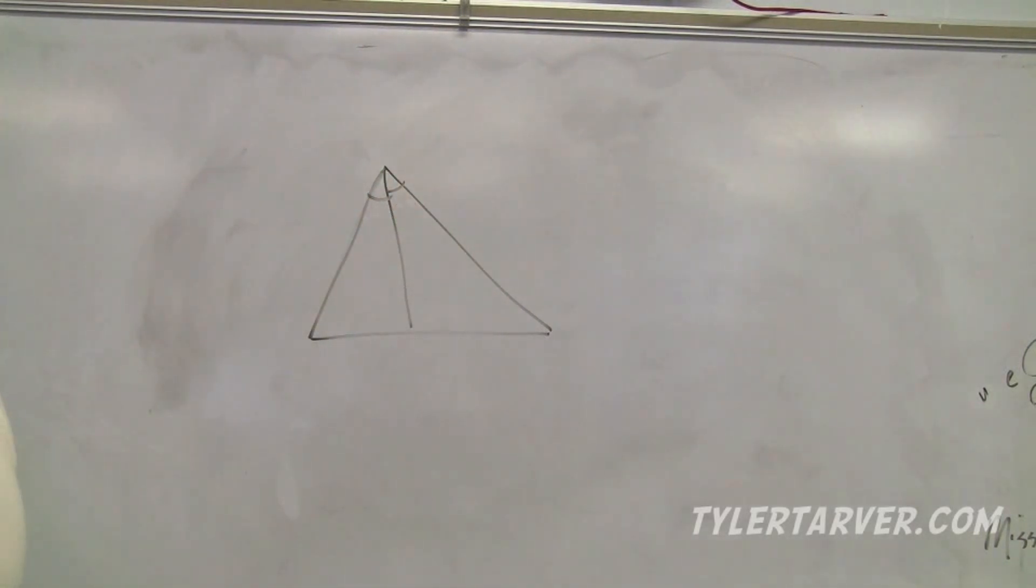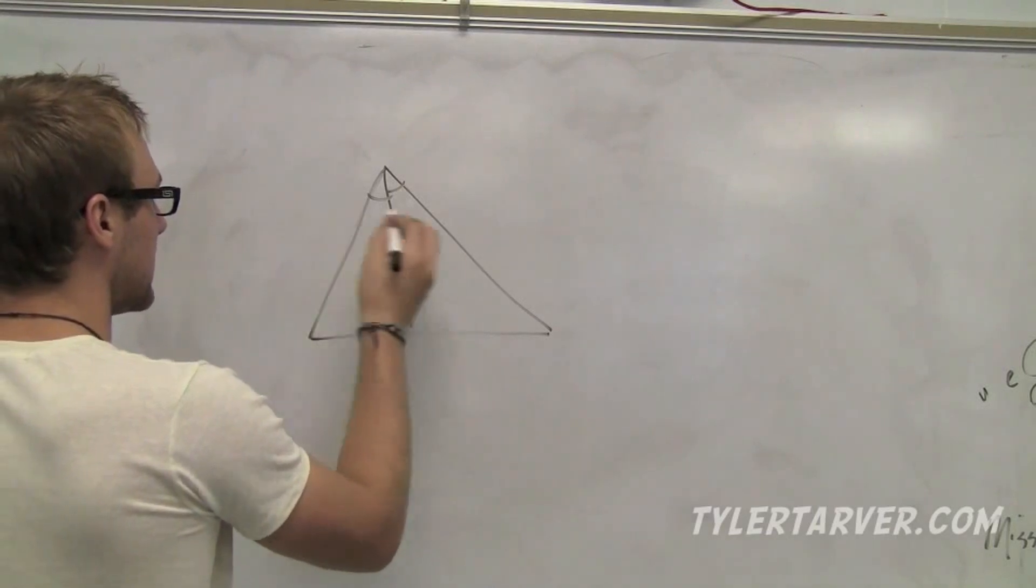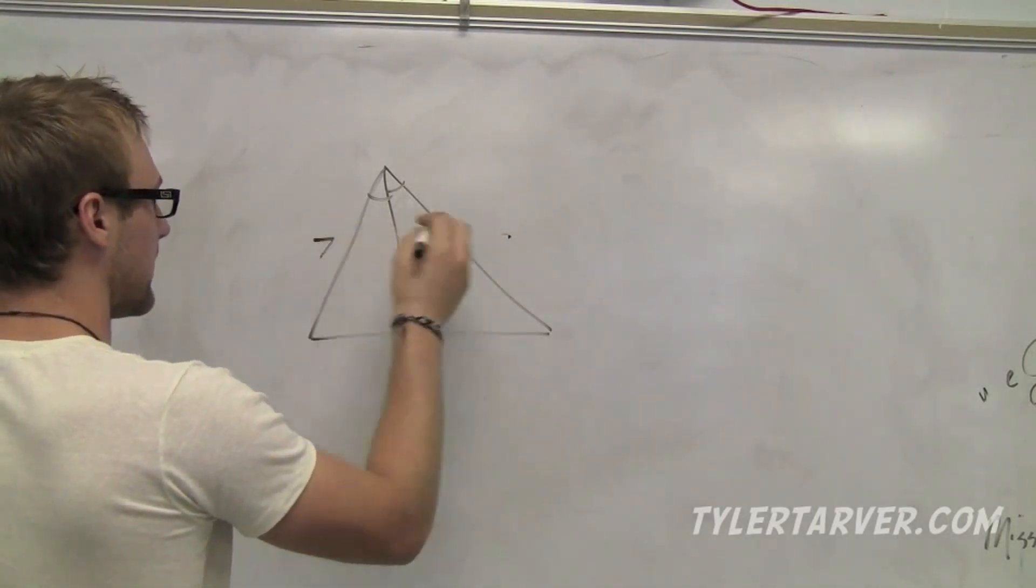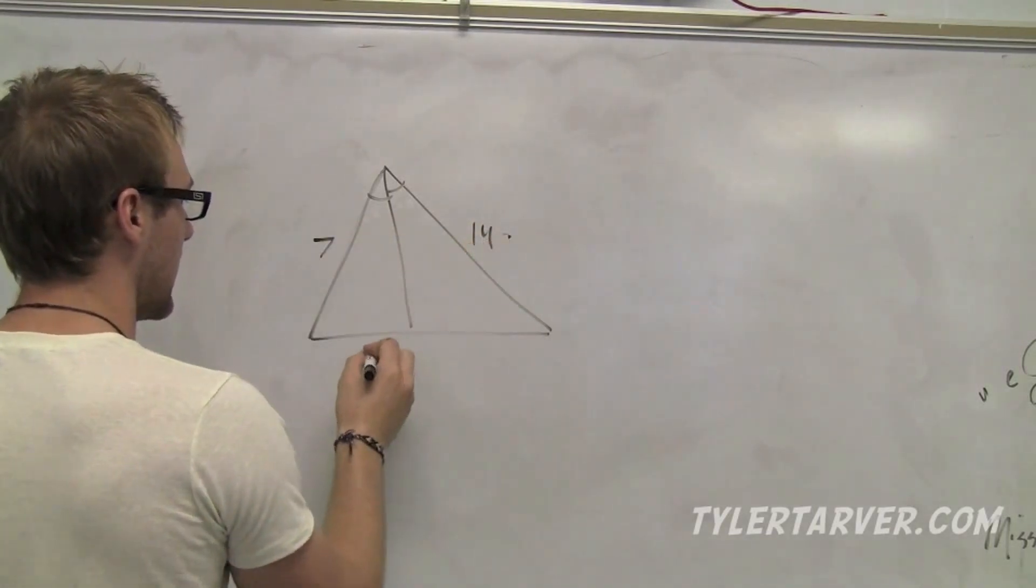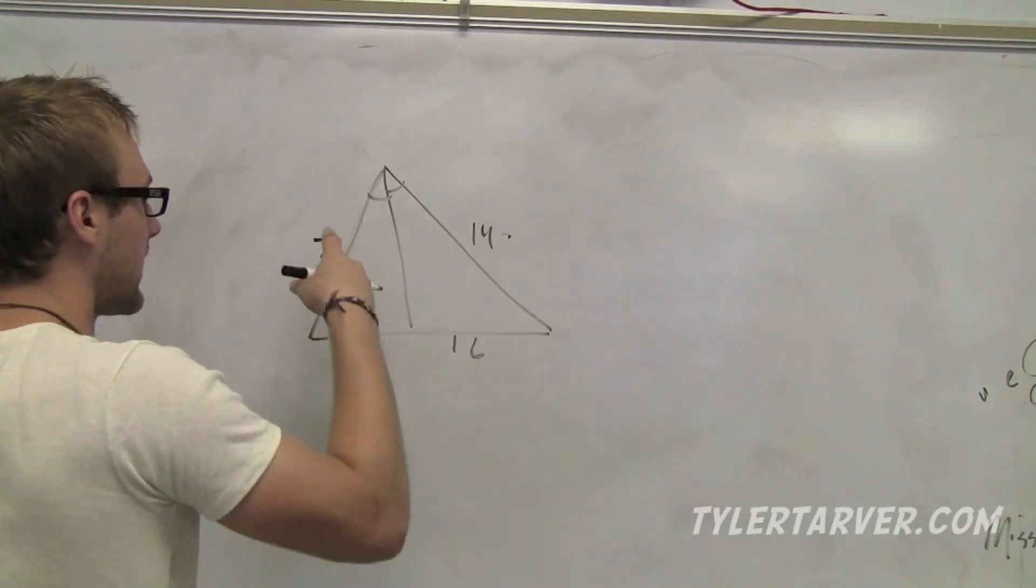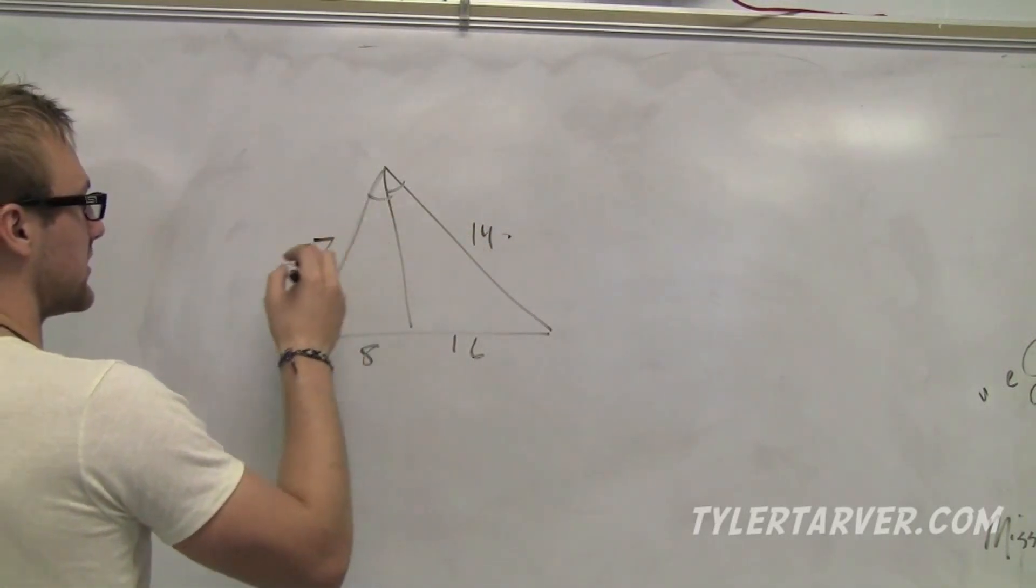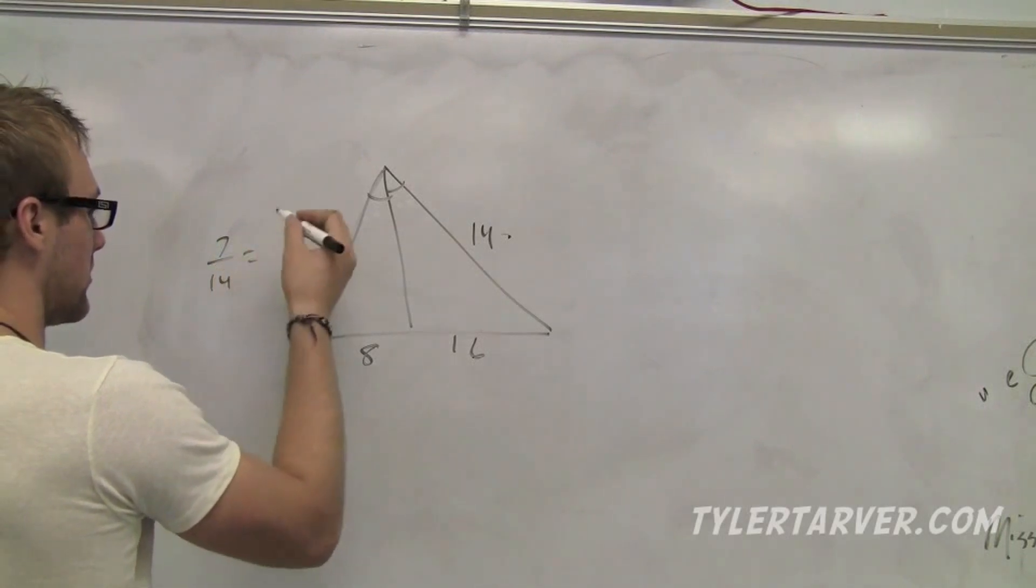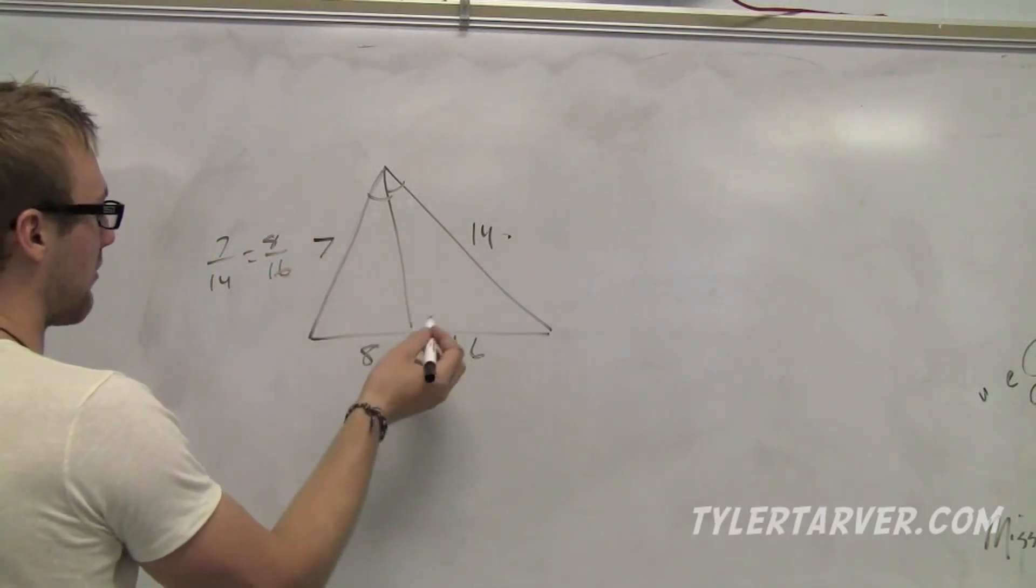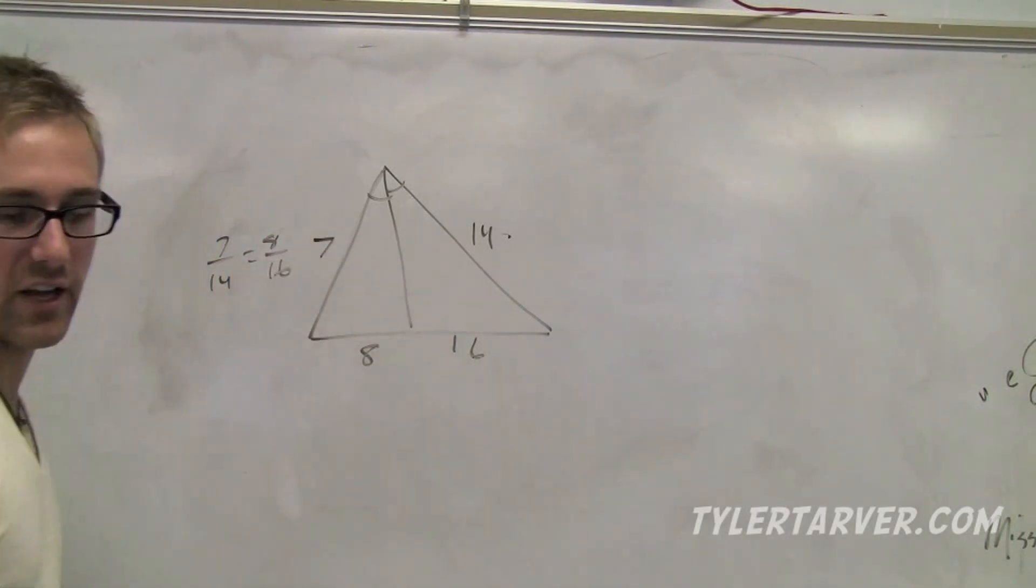What this thing is going to do is it's going to set it up into a proportion. You guessed it. Which means that this is proportional to this, like 7 is to 14, as 8 is to 16. It cuts these things proportionally. And you can set it up, 7 over 14 equals 8 over 16. If you didn't have one of those side measures, you can always figure it out.